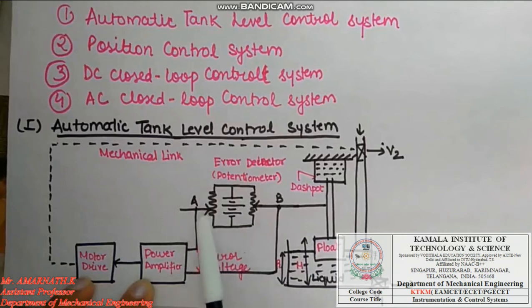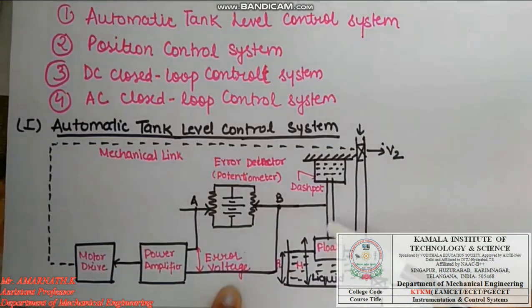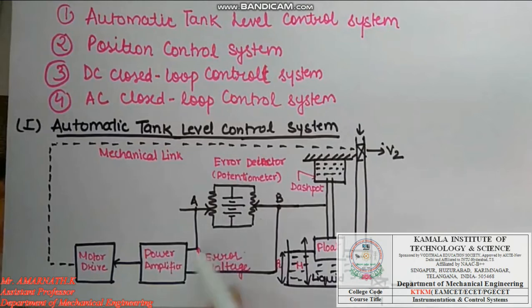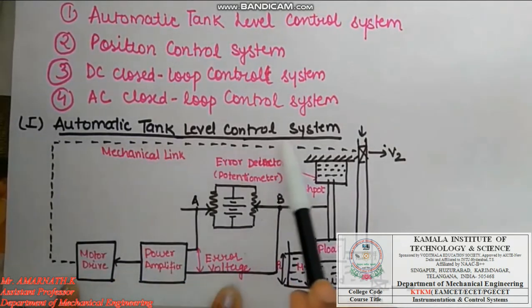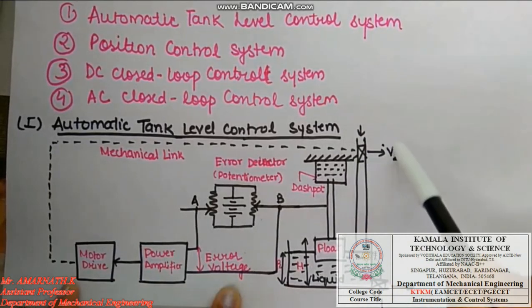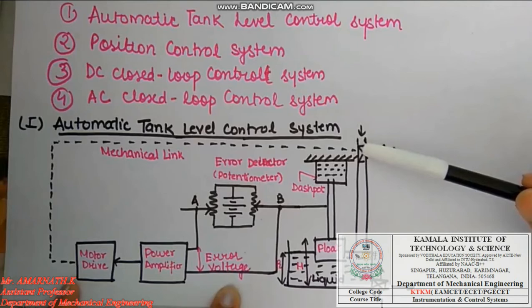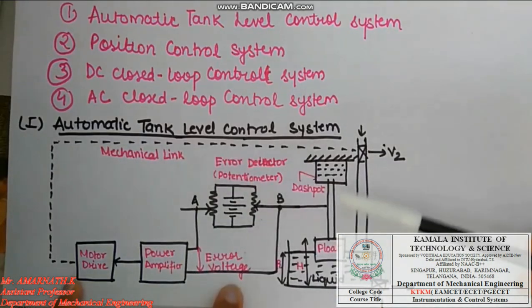The difference between set point capital H and current water position small h is transferred via a float to the error detector. The power amplifier, which consists of arm A, changes its position according to changes in the float connected to arm B. The change in liquid level causes a feedback element voltage difference, which feeds to gate valve V2 connected in the closed loop control system. The gate valve acts according to the sensing elements, opening or closing to flow water into the required tank.